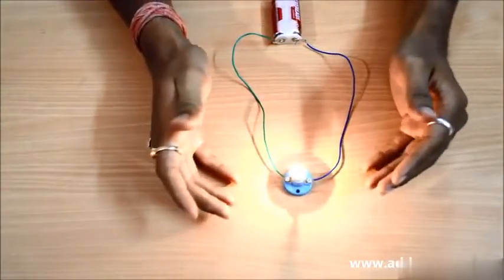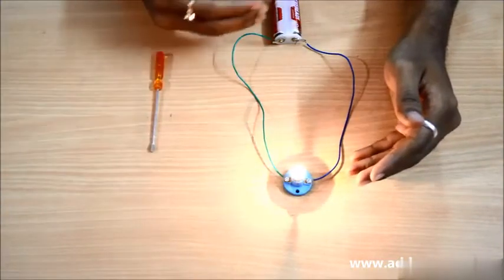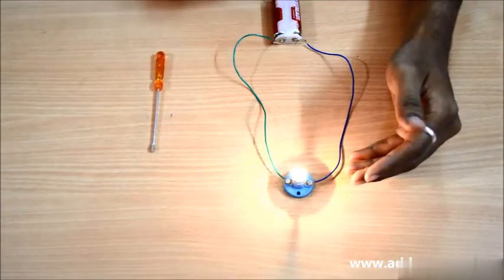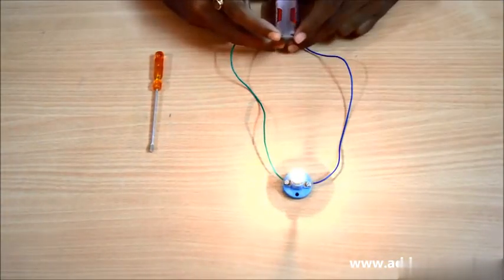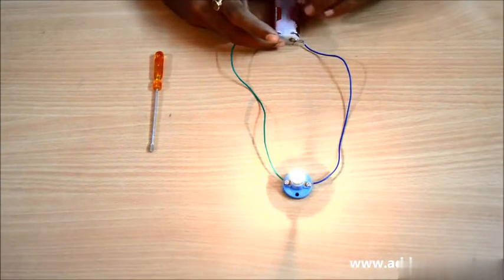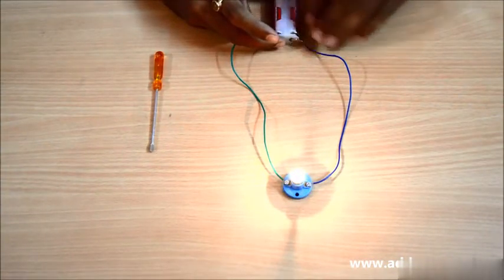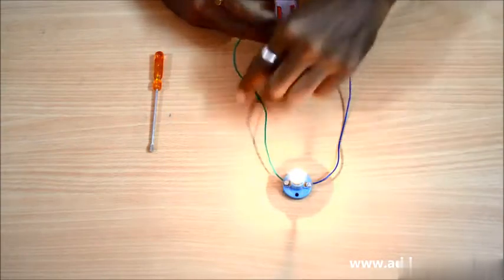And voila, the bulb is glowing. So this is how it works. The electrical energy, the current which is stored in the battery is actually traveling to the bulb and back to the battery.